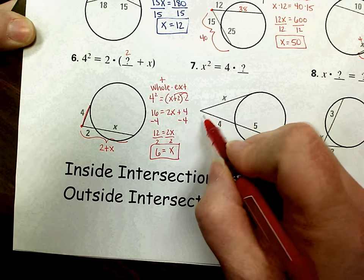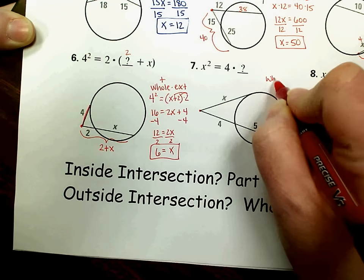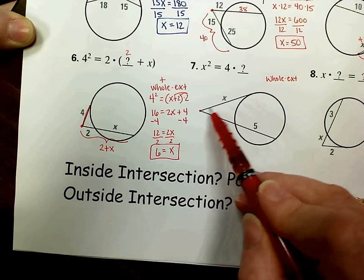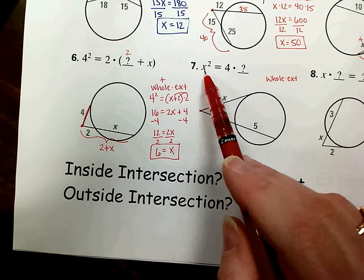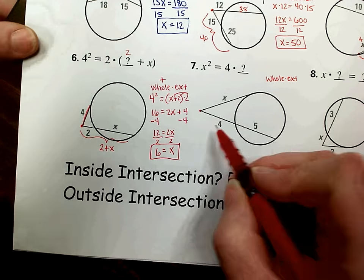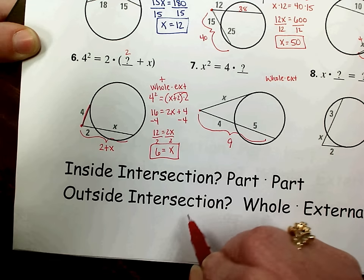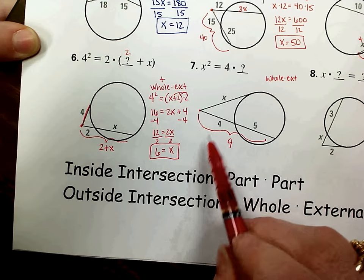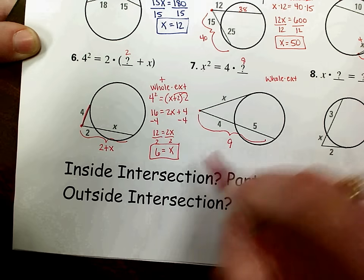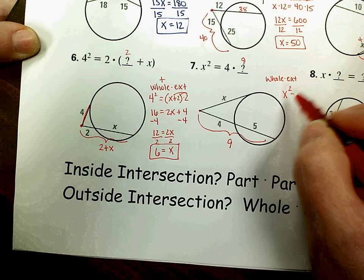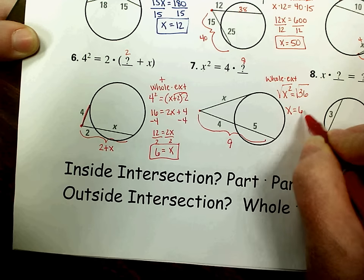The next external intersection is number 7. This tangent and this secant intersect outside the circle, so we have a whole times external relationship. When you have a whole times external for the tangent, the whole and the external are going to be the same number, so it's going to be x times itself, which is x squared. When you do whole times external of the secant, your whole length is the addition of the parts — 4 plus 5 is 9. So x times x is x squared for the tangent, and whole times external would be 9 times 4. So you'd have x squared equals 4 times 9, which is 36. Taking the square root of both sides, you get x equals 6.